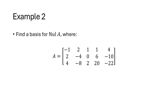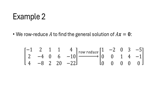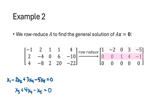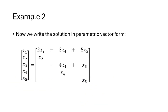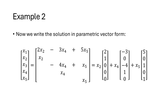Let's find a basis for null(A) for a specific matrix A. We start by row reducing A, since we're solving Ax = 0. We rewrite each row as an equation, solve for the basic variables, and write the general solution. Then we write this solution in parametric vector form, with one vector for each free variable. That gives us three vectors which form a spanning set for null(A).